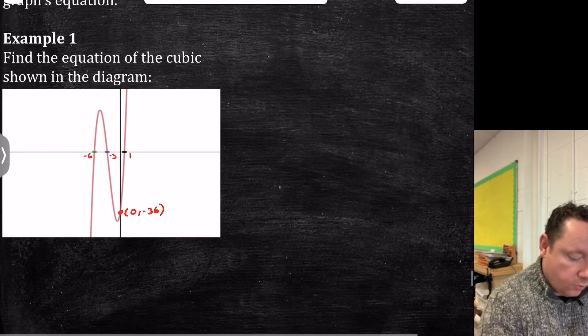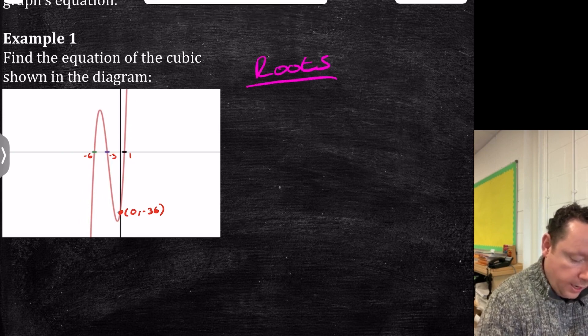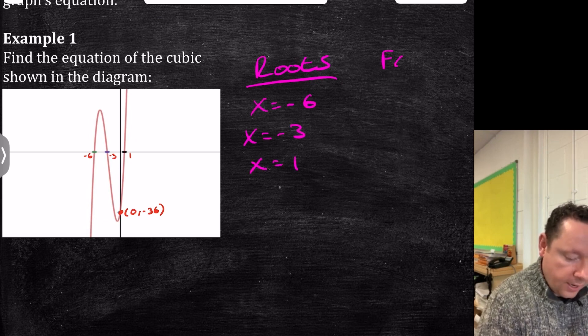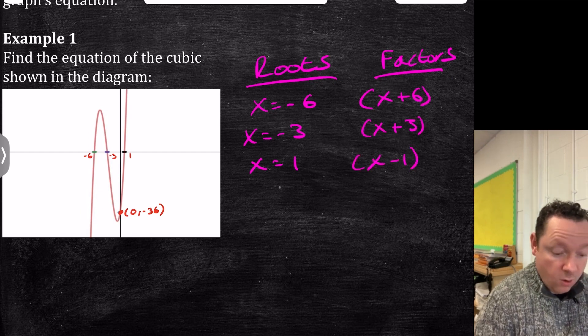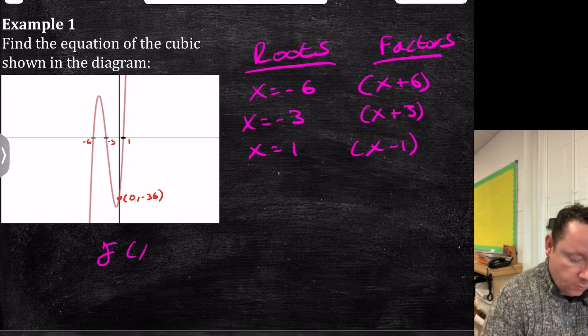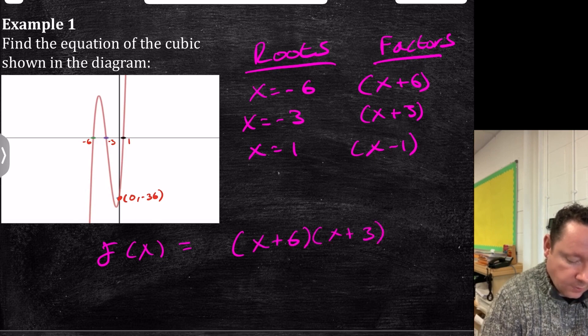Now, since we've got our roots, we can immediately say, here's our roots. Our roots are x equal minus 6, x equal minus 3, and x equal 1. So therefore, we've got our factors. We can write our factors: x plus 6, x plus 3, x minus 1. And therefore, we're almost done. f of x must equal, I'll leave a little gap, but it's x plus 6 times x plus 3 times x minus 1.